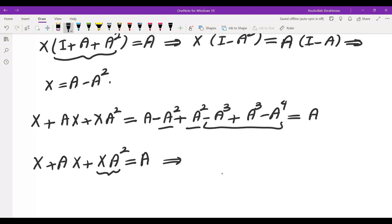I started multiplying both sides by A so that I can kill the A squared terms. This gives me XA plus AXA plus 0 equals A squared.